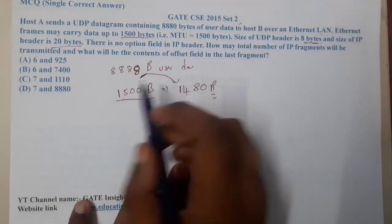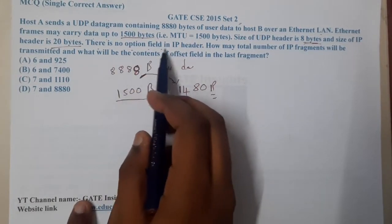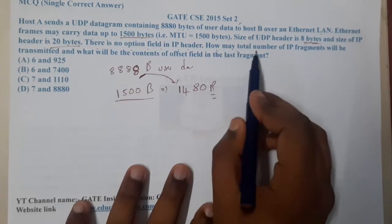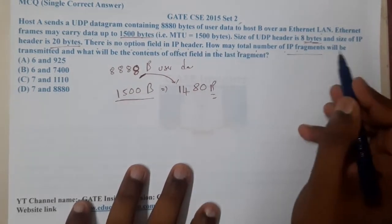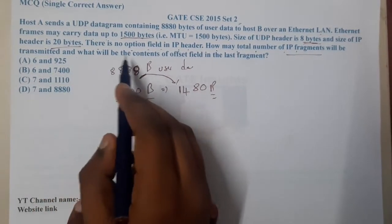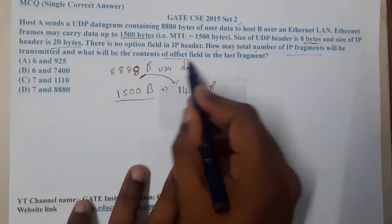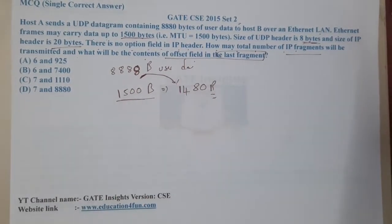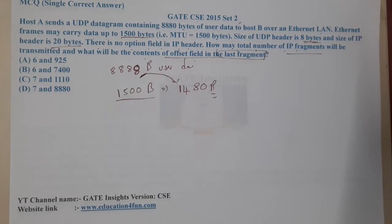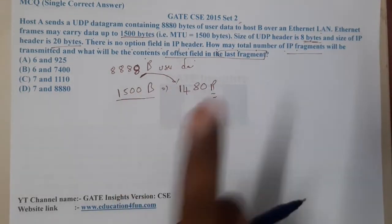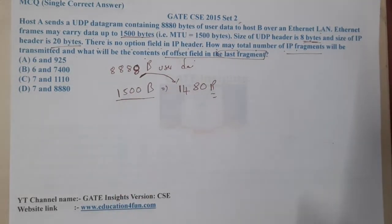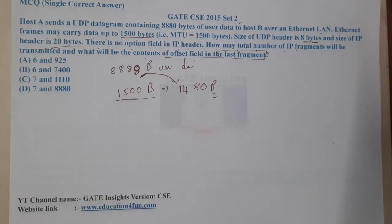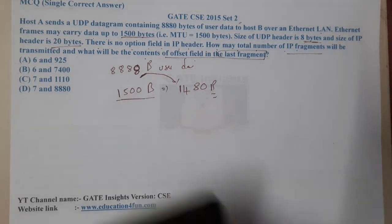There is no option field in the IP header. The question asks: how many total IP fragments will be transmitted, and what is the fragment offset of the last fragment? There are two approaches to solve this — the step-by-step manual method and a shortcut trick.